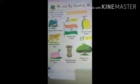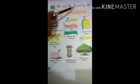Country kisko bolte hai? Jantate hai ab. Jaysay hum sabi ko naam hai, vaisa hum jahaan pe rate hai, us jaga ko bhi naam hai, usko country bolte hai. Matlab apna desh. Apna desh ka naam kya hai? India. India is our country.